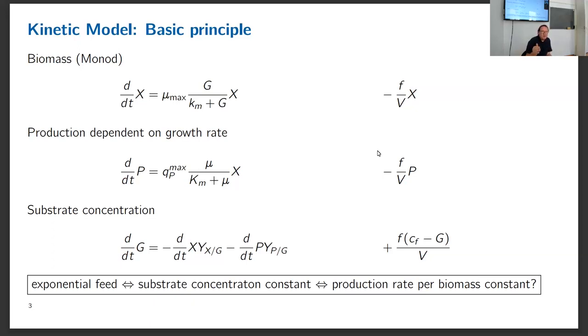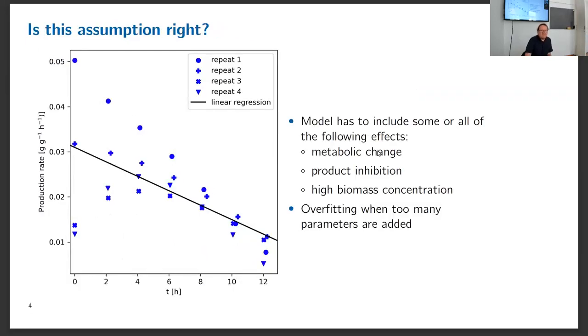This is not only true for simple models but also for most kinetic models. The question is, is this really true in the real bioprocess? Well, not really. For our data I see a constant increase of production rate even if the uptake rate is constant. Maybe there's some metabolic change that happens due to production, or possible production inhibition or effects of high biomass concentration. The problem is if I use all these parameters I have a very complex model for a limited set of data and will have a problem with overfitting.